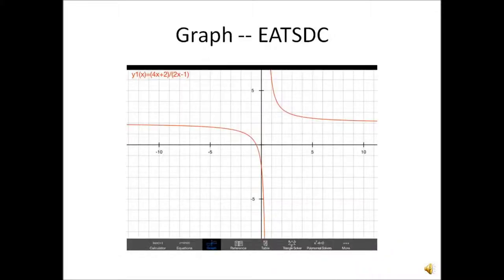Here's the graph of the function. Although the vertical asymptote is not clearly marked, you can see it's probably around x equals 1/2. You can also see that as the values of x get larger or smaller, the graph approaches y equals 2. In this case, the horizontal asymptote is truly excluded from the range, so the range of this function is all real numbers except y equals 2.